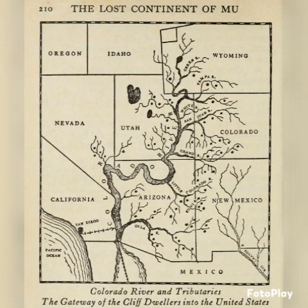When the cliff dwellers came to America is problematical. There is no positive evidence, nor anything to give us any intimation. They or their ancestors, however, were here before the mountains were raised, which would fix their date at 12,500 years ago.